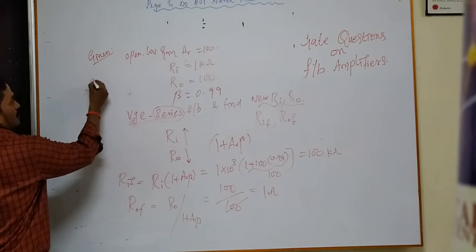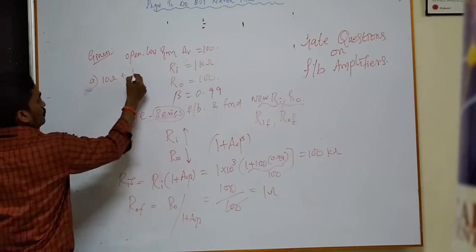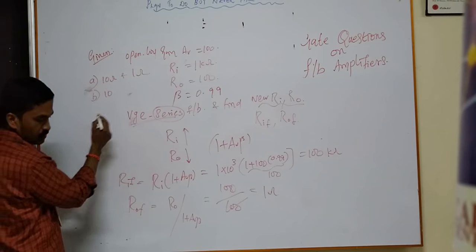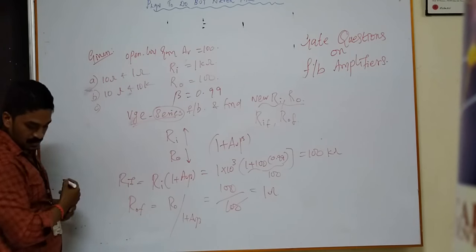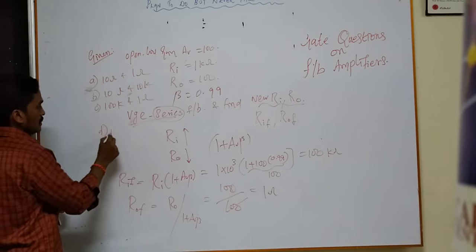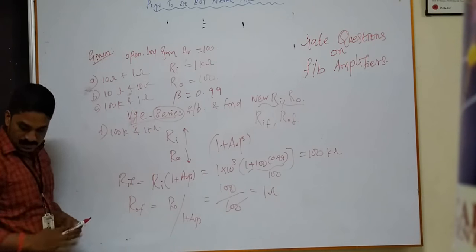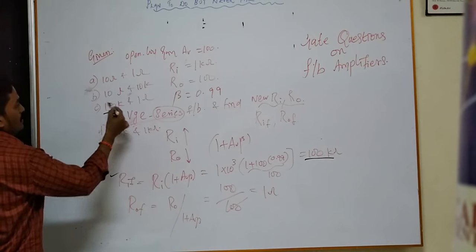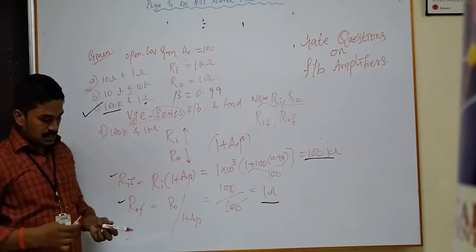The options are: option A: 10 Ω and 1 Ω; option B: 10 Ω and 10 kΩ; option C: 100 kΩ and 1 Ω; option D: 100 kΩ and 1 Ω. Since Ri_f = 100 kΩ and R0_f = 1 Ω, option C is the right answer.